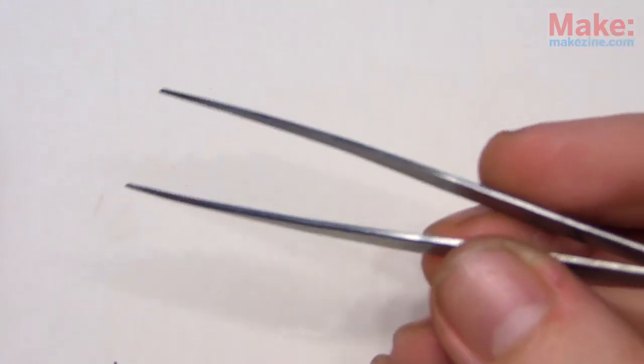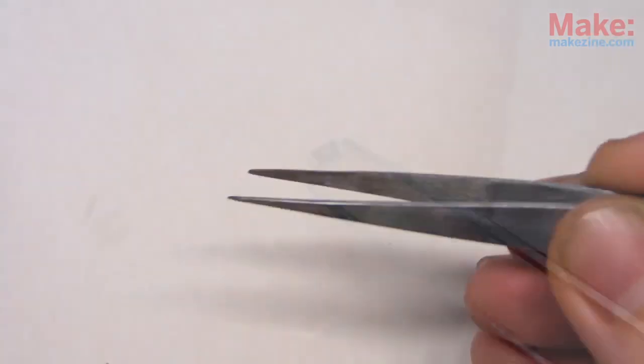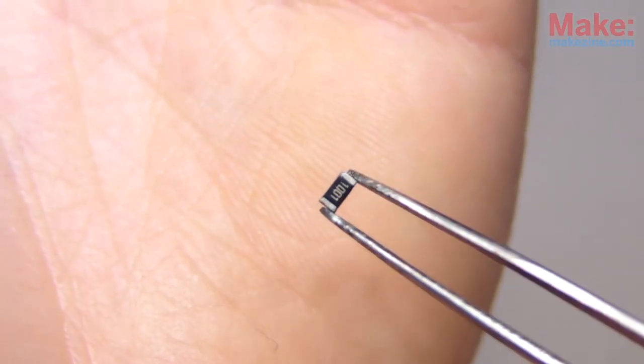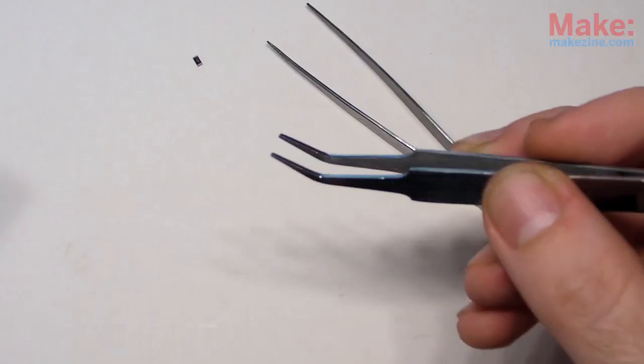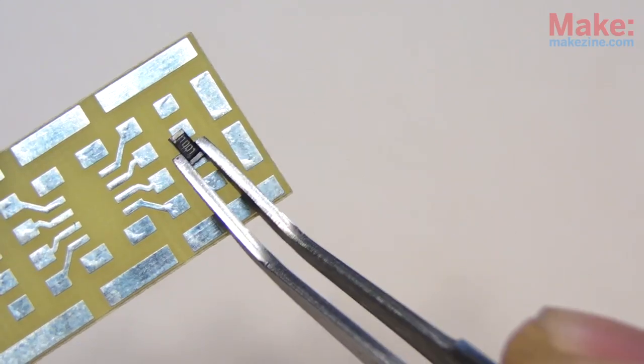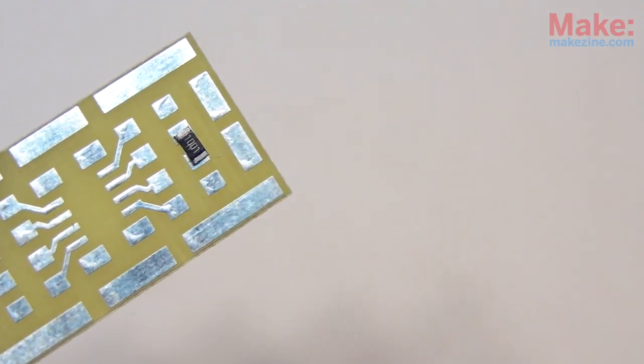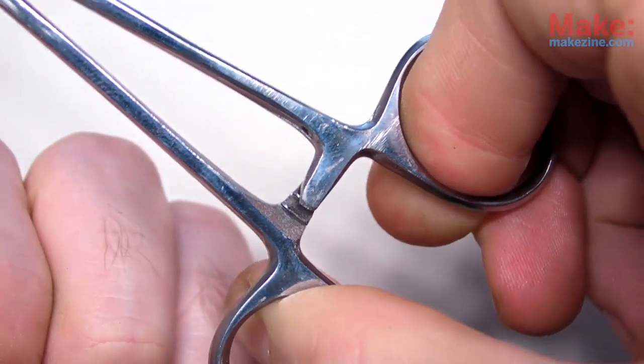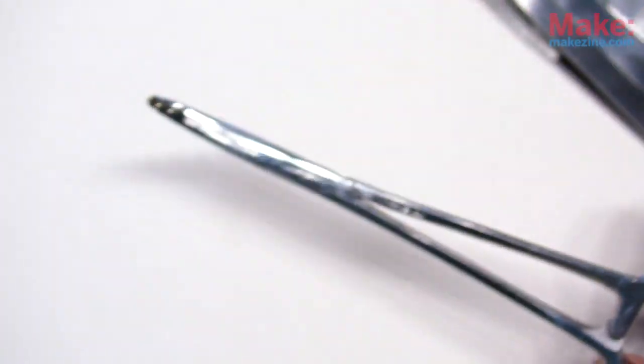When more precision is required, a pair of tweezers comes in handy. Angled tweezers work well for placing surface mount parts, and hemostats provide a helpful locking mechanism for keeping a good grip on small bits.